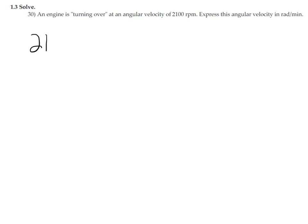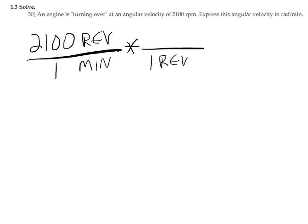So 2100 rpm stands for revolutions per minute. To convert this into radians we need to know that one revolution is exactly 2π radians. Now we convert: 2100 times 2π is 4200π radians per minute.